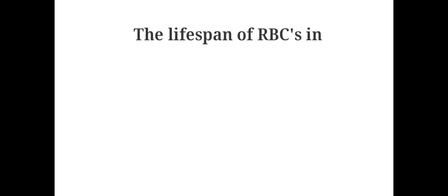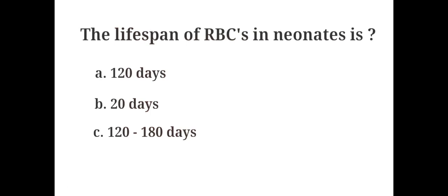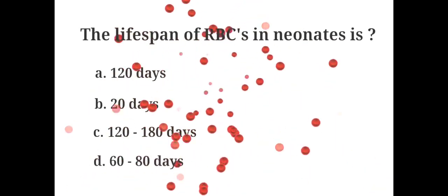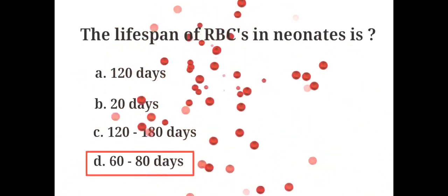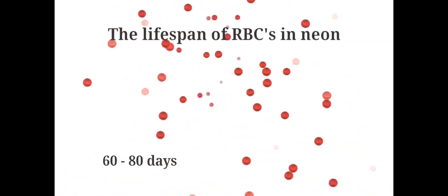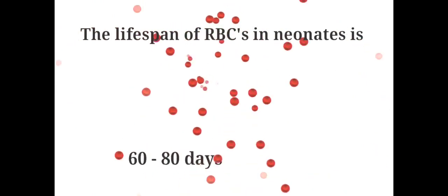The lifespan of RBCs in neonates is: A. 120 days, B. 20 days, C. 120 to 180 days, D. 60 to 80 days. The answer is D. The lifespan of RBCs in neonates is 60 to 80 days.